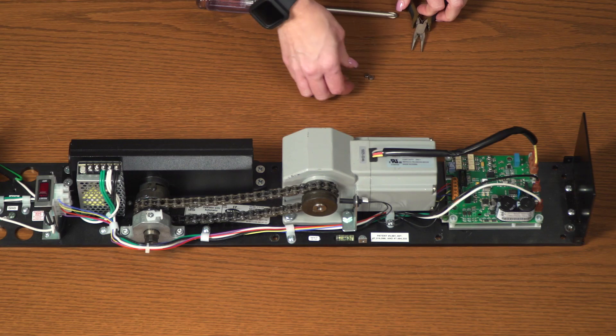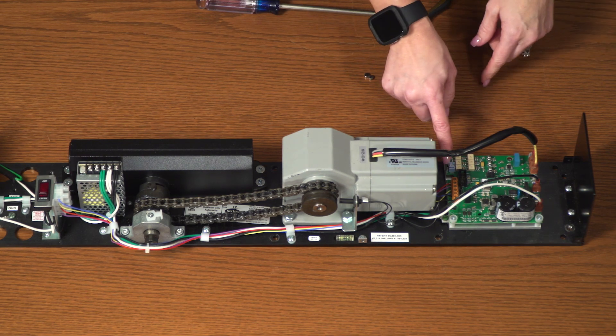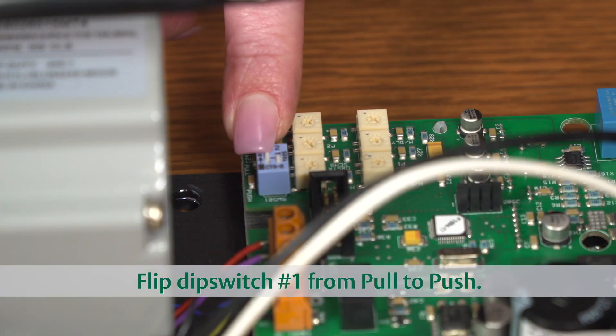Next, on the upper left corner of the circuit board, find dip switch number one and flip the switch from pull to push operation.